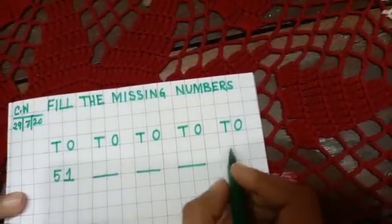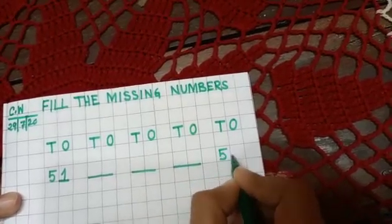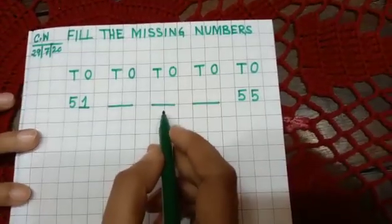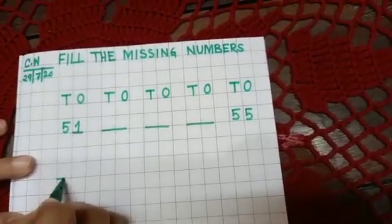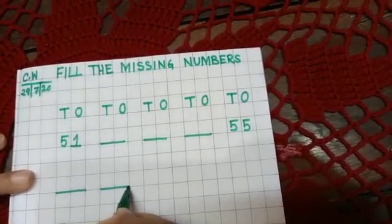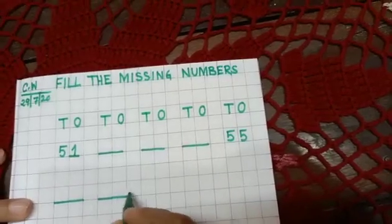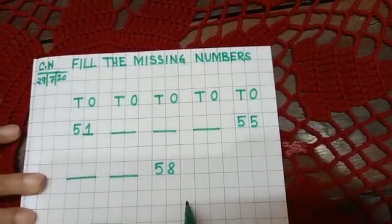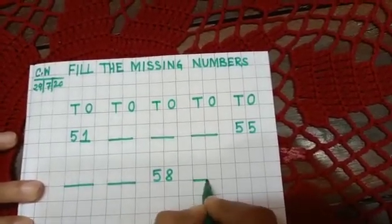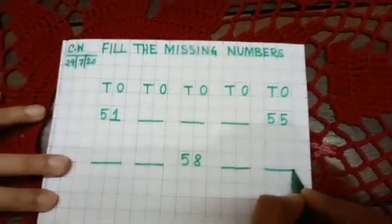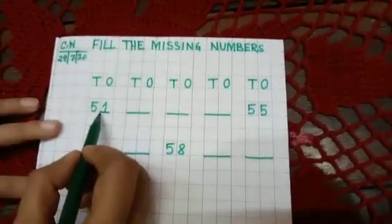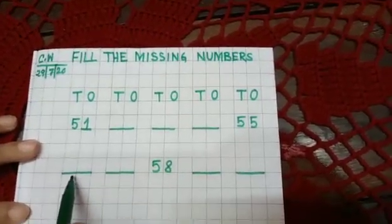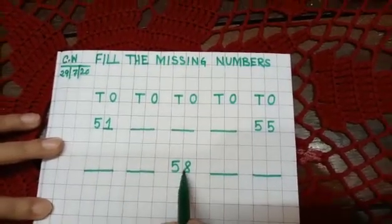Now write 51 — five one — then give dash dash, then write 55 — five five — you have to write by yourself. Then give dash dash. Then write 58 — five eight — then give dash dash and again dash dash. So: 51, dash dash, dash dash, 55, dash dash, 58, dash dash.